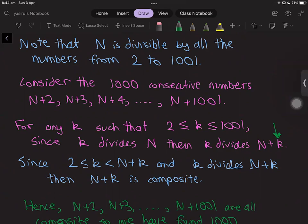Since k is at least 2 and also k is less than N+k, this means k is a factor of N+k that is between 2 and less than N+k.